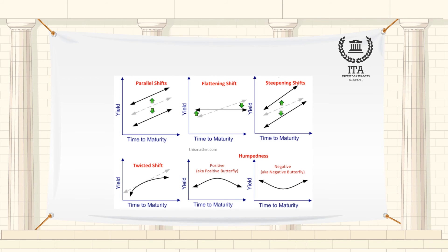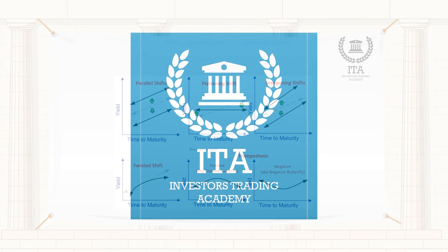Even if the direction of a yield curve is unchanged, useful information can be gleaned from the changes in the spreads between yields on bonds of different maturities and on different sorts of bonds with the same maturity, such as government bonds versus corporate bonds or thinly traded bonds versus highly liquid bonds.